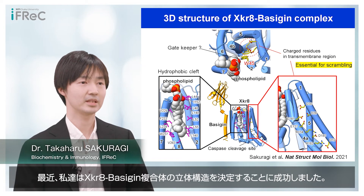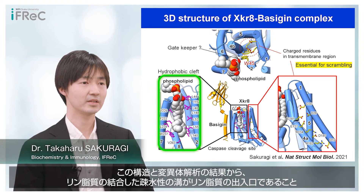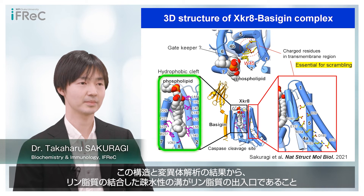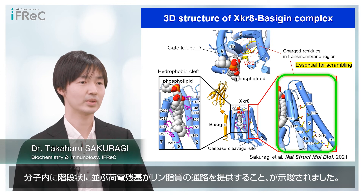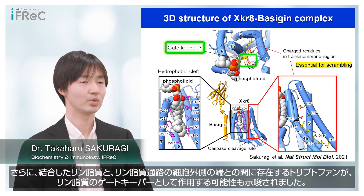Recently, we determined the tertiary structure of the XKR complex. This structure, together with mutational analysis, suggested that a hydrophobic cleft harboring phospholipid could be an entrance or an exit of phospholipid. A region with several charged residues placed from top to bottom like stairs inside the molecule seems to provide a pathway for phospholipid translocation. In addition, one lipid arm present between the phospholipid and the extracellular end of the pathway could work as a gatekeeper for phospholipids.